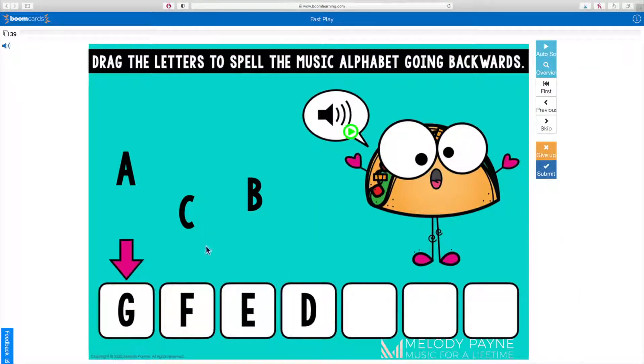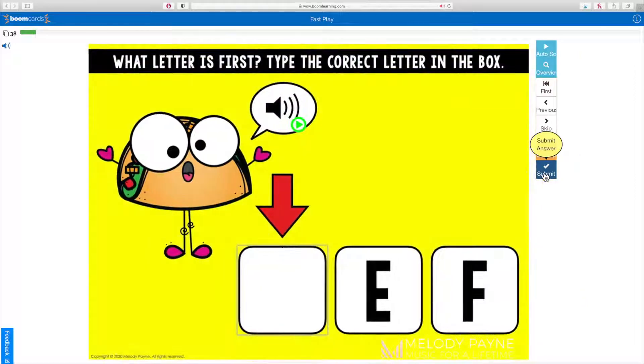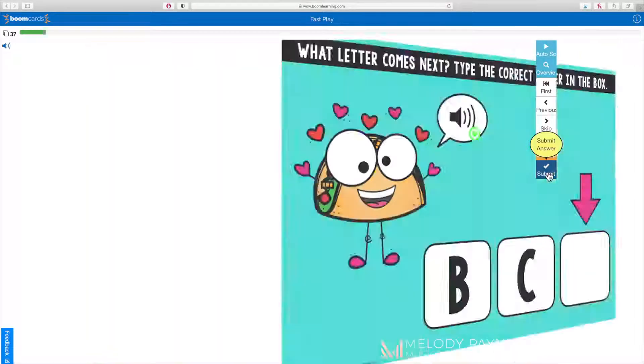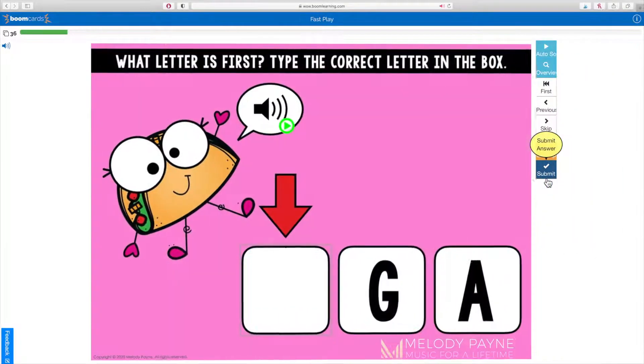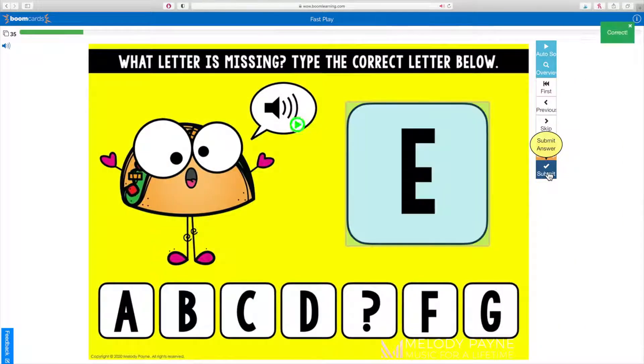This music alphabet set of boom cards reviews a very important skill for beginning pianists in a variety of ways. The deck includes 39 cards. Formats are drag-and-drop and type the correct letter.